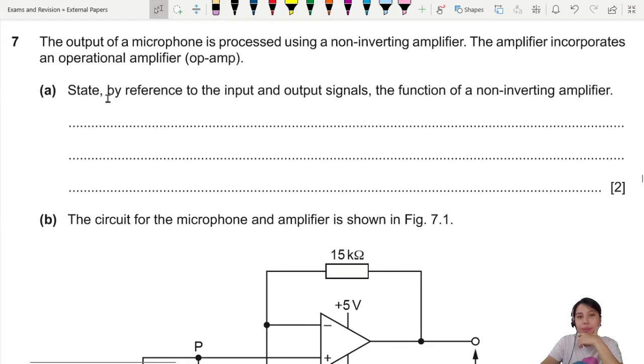This is an Op-Amp question where you have a microphone processed using a non-inverting amplifier. What's the purpose of an amplifier? To make it louder. Turn up the volume so you can hear YouTube louder. The amplifier incorporates an Op-Amp.